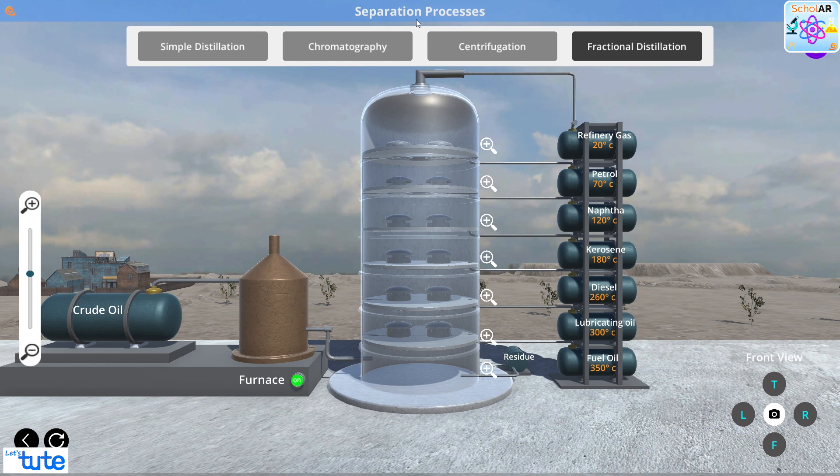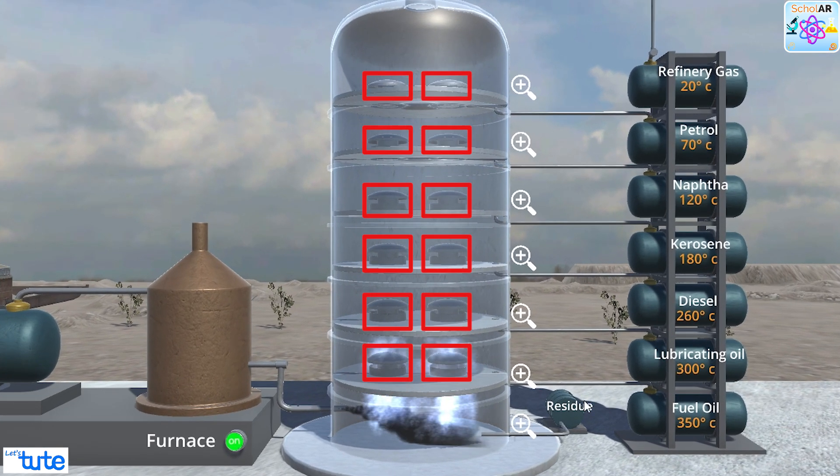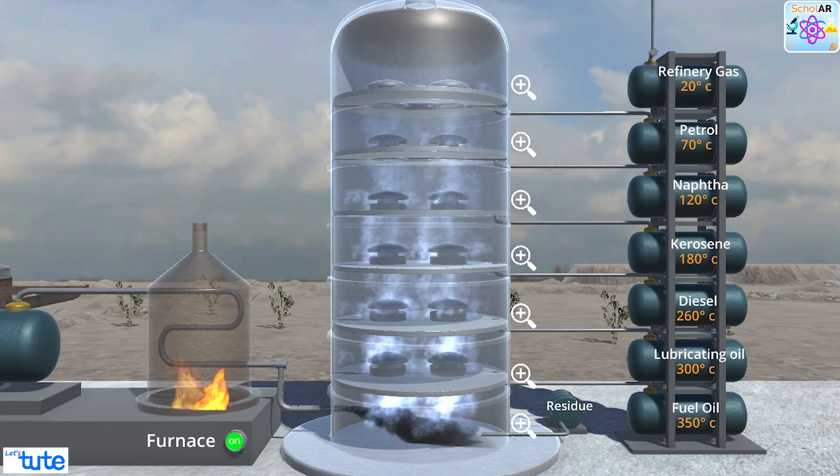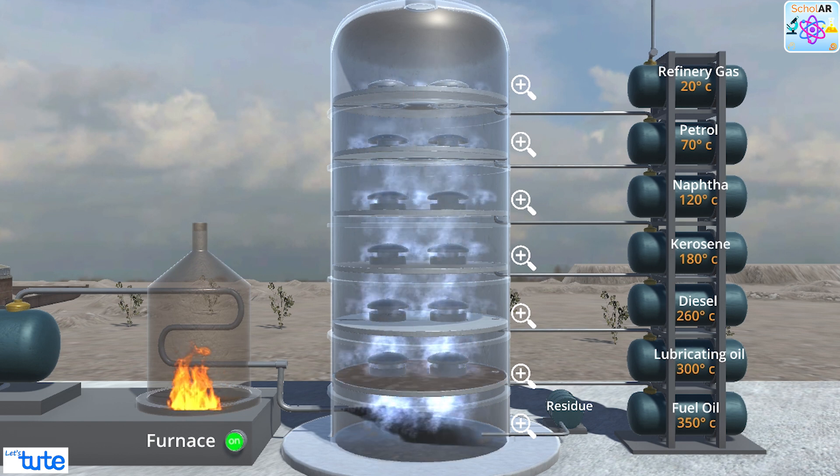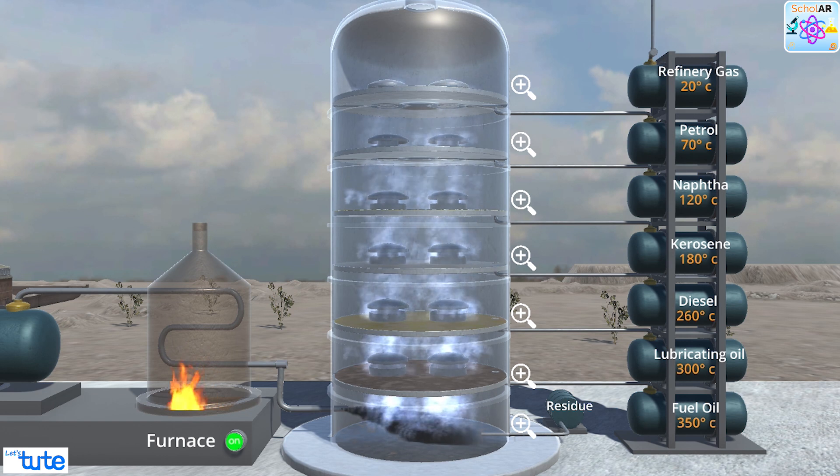Now we have to click on the furnace. We can see that the trays have holes with caps on them to allow the vapor to pass through. They increase the contact time between the vapor and the liquids in the column and help to collect liquids that form at various heights in the column.